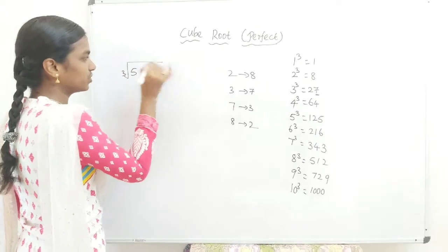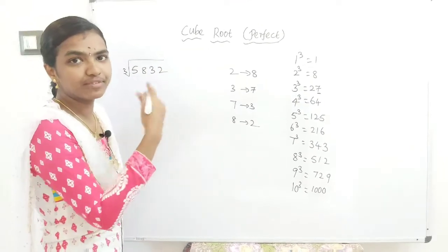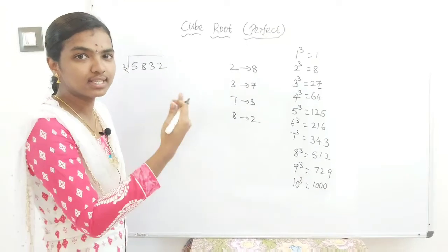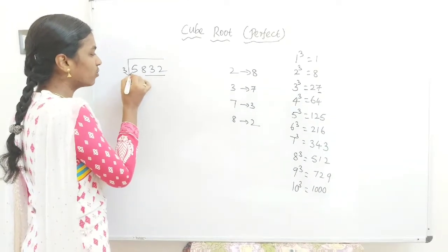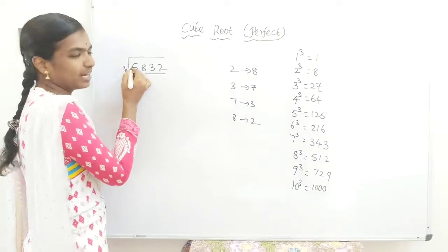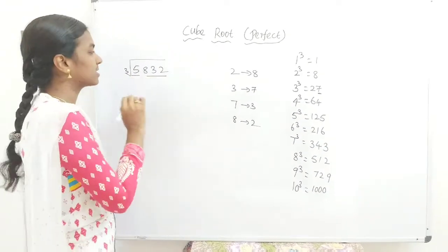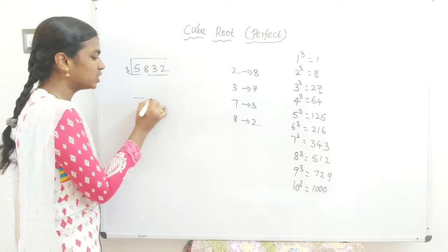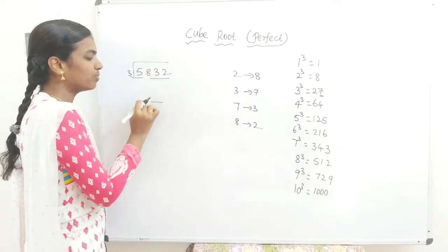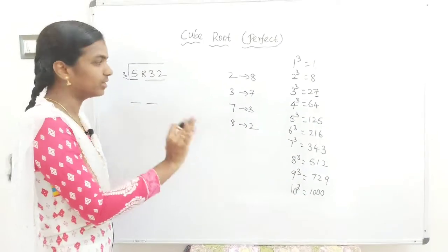Cube root of 5832. Split 3 digits from the right side. Here 1, 2, 3 - we have only 1 part on the left, so write 1 before 2 zeros. Our answer will be 2 digits only because we have 2 parts.